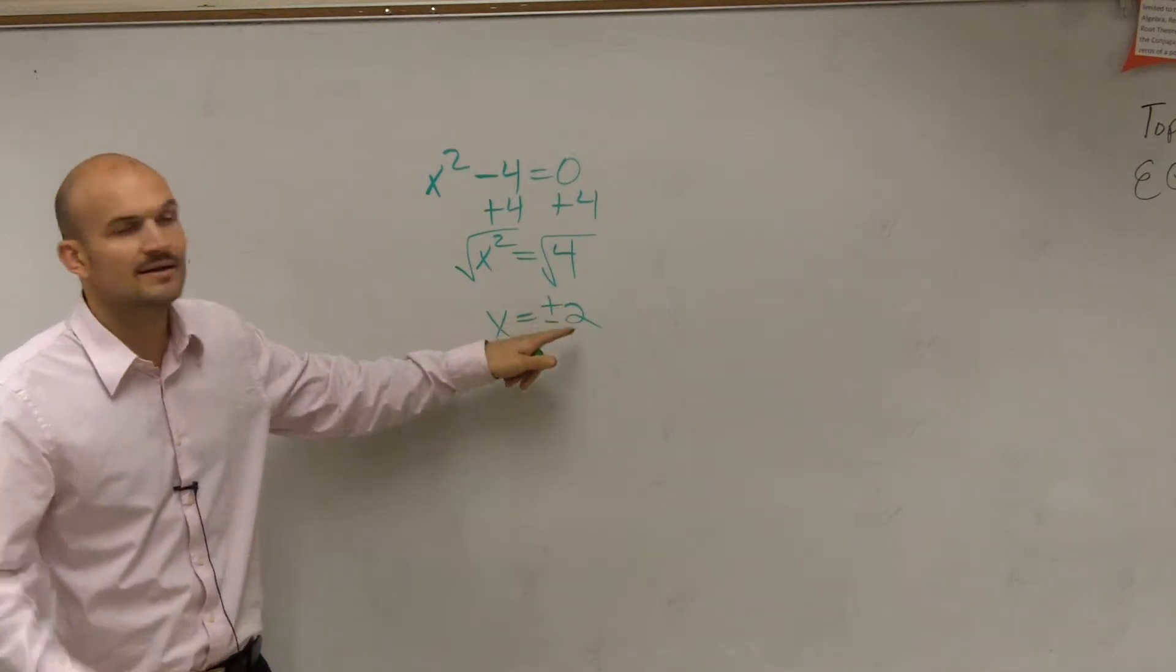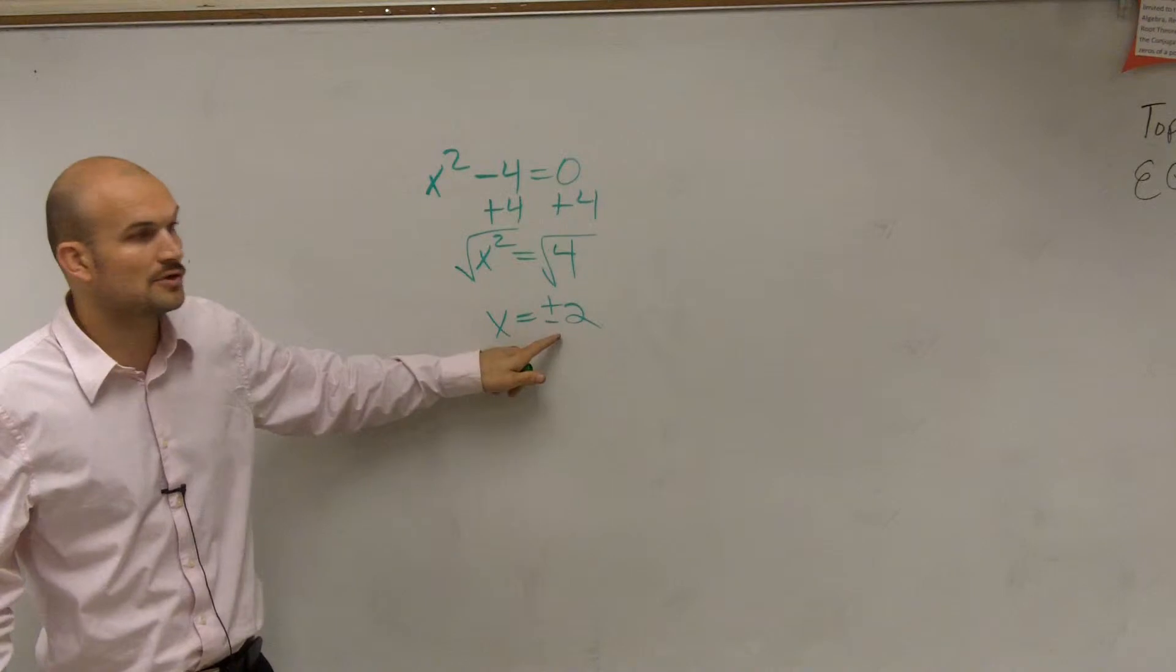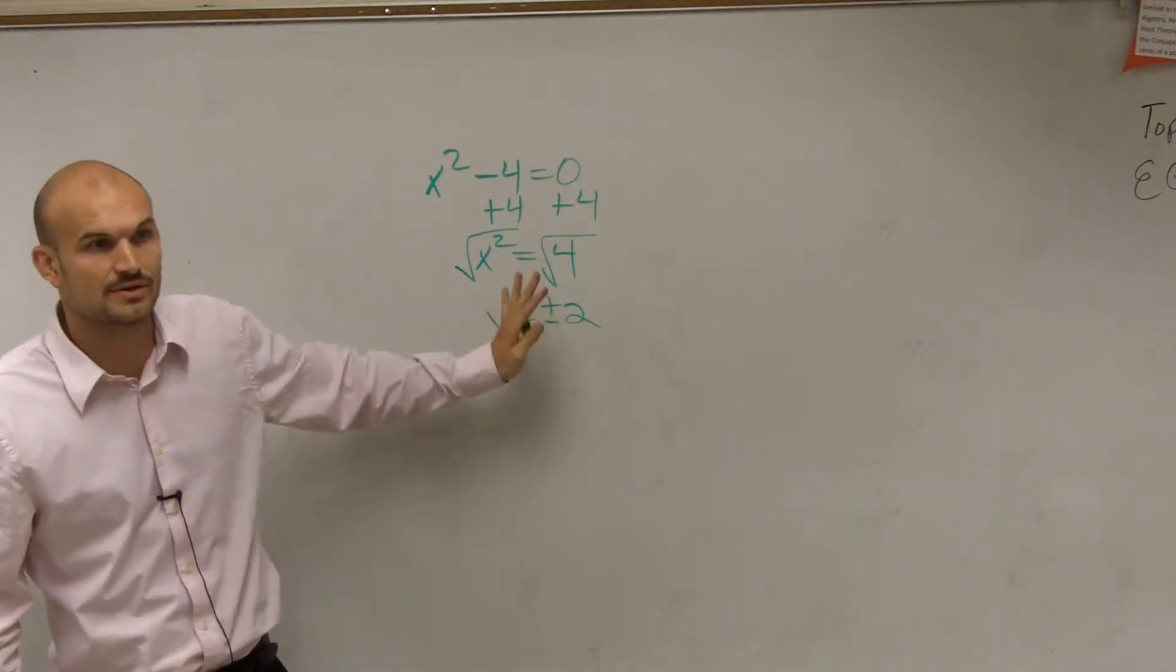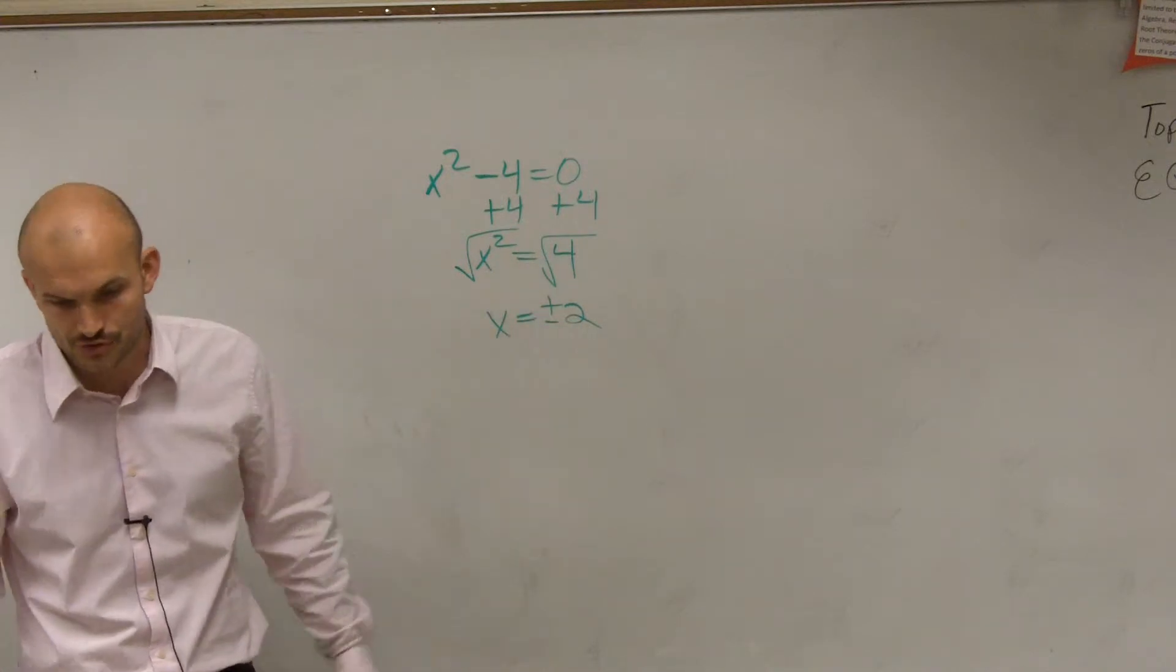So there's two examples. And then through our knowledge, we also knew that those are your two x-intercepts of a graph. Right? And that's where the graph crosses. Those are also the solutions that make our equation true.